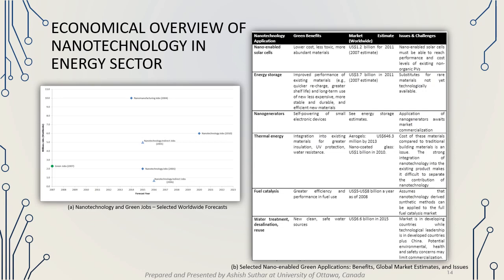In this slide, we discuss the economical overview of nanotechnology in the energy sector. The first picture shows nanotechnology and grid jobs over selected years worldwide, with forecasts for upcoming years. The second picture shows global market estimates and different issues related to nanotechnology applications, including nanosolar cells, energy storage, nanogenerators, thermal energy, fuel catalysts, and water treatment. Of these, thermal energy has the largest market worldwide, and each application has issues and challenges expected to be resolved in upcoming years.